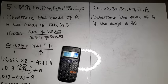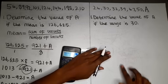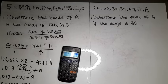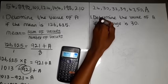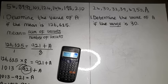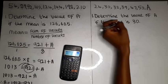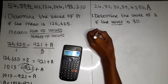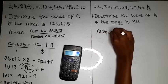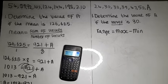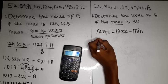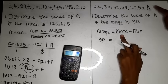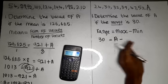Now let's move to the second example, where we are dealing with range. We have been given the range and are supposed to find the value of 'a'. The question says: determine the value of 'a' if the range is 30. Since we have been given the range, we use the formula for calculating range: range equals maximum minus minimum.